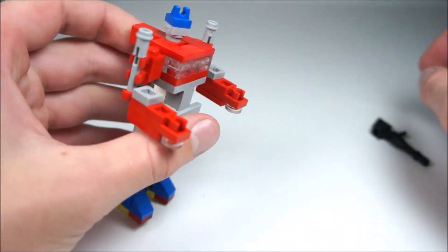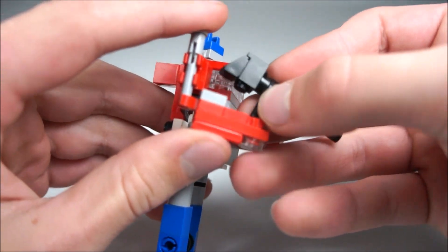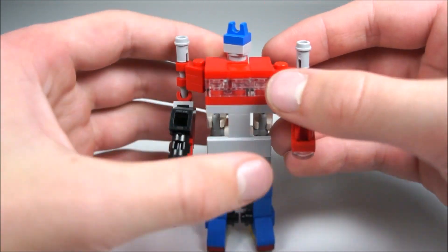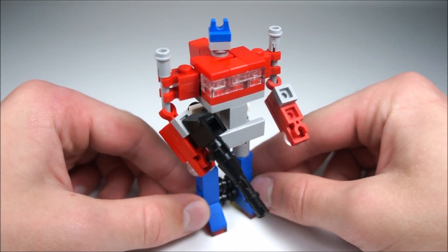And he looks really good. Then you can take his gun and just slot it in right there. Kind of position everything how you want it. And there you have Mini Optimus Prime G1 V2.